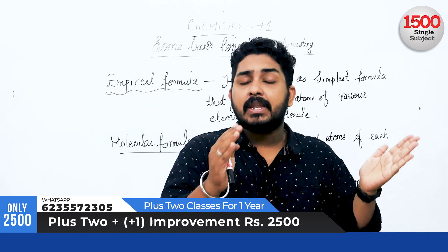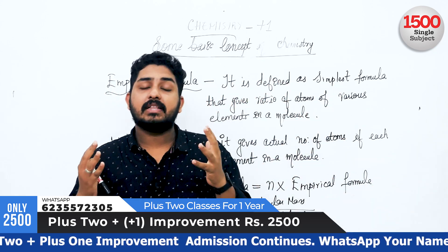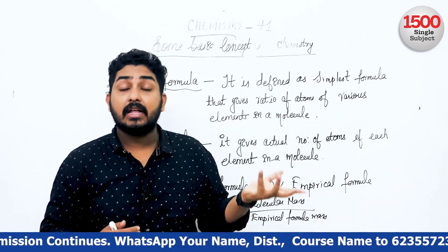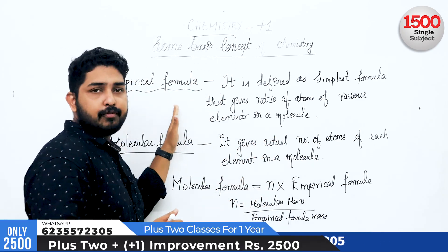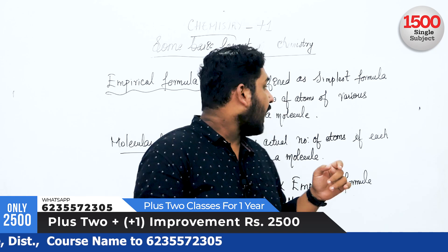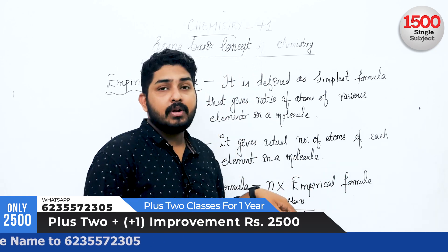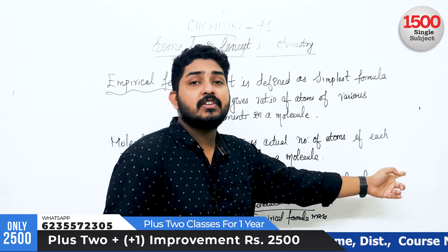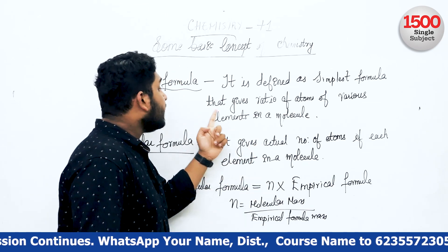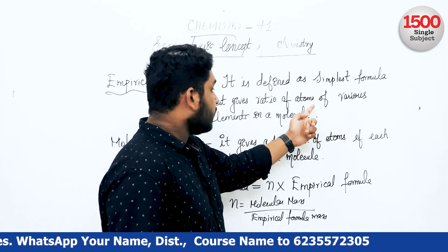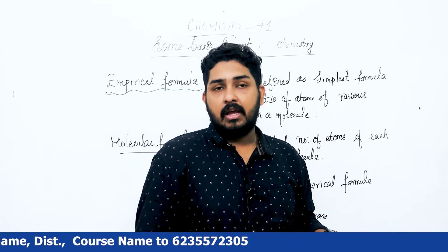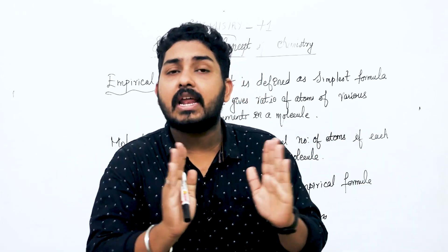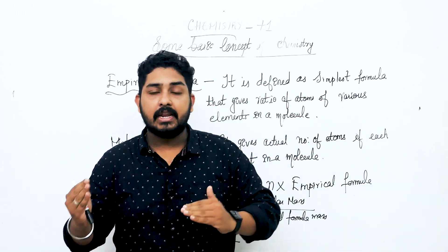What do we call empirical formula? What do we call a compound with any atoms or any element? Empirical formula is defined as the simplest formula. It gives the ratio of atoms of various elements in the molecule. The ratio of atoms — that is what we call empirical formula.